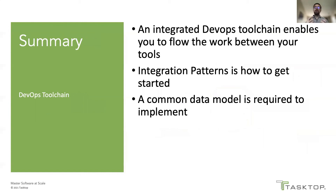To summarize, an integrated DevOps toolchain enables you to flow the work between your tools to improve efficiency, collaboration, and traceability across your software delivery value streams. Integration patterns are an incremental way to get started, and employing a common data model is required to implement integration and capitalize on the improvements in flow. I hope you enjoy learning more about creating a DevOps toolchain to optimize flow in software delivery.